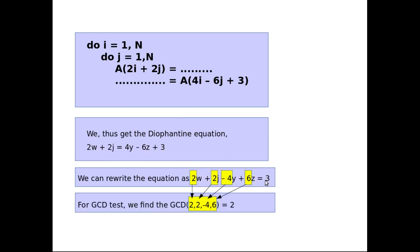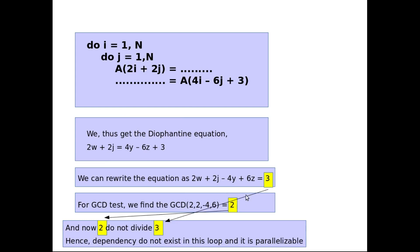And now for GCD test, we have to find out the GCD of 2, 2, minus 4 and 6. And as we can see, the GCD of 2, 2, minus 4 and 6 is equal to 2. And now we have to find out whether this GCD divides c or not. So in this case the GCD is 2 and c is 3. And we can see that 2 does not divide 3 and hence dependencies do not exist in this loop and hence this loop is parallelizable.